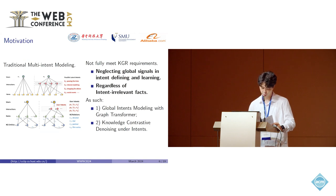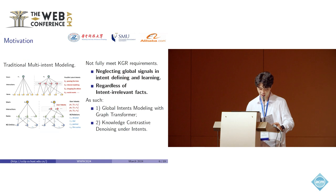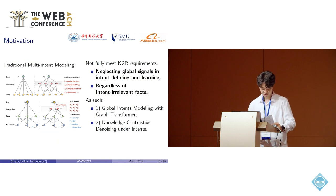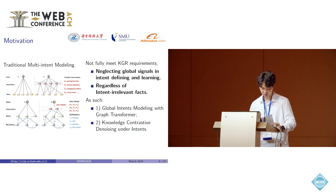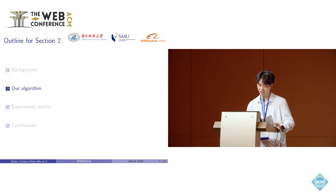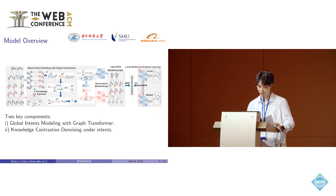Meanwhile, we need to denoise the knowledge graphs and remove intent-irrelevant knowledge. We hence propose to model the global intents with a graph transformer and conduct knowledge denoising under user intents with sampling strategies and contrastive mechanisms. Next, we introduce our model.